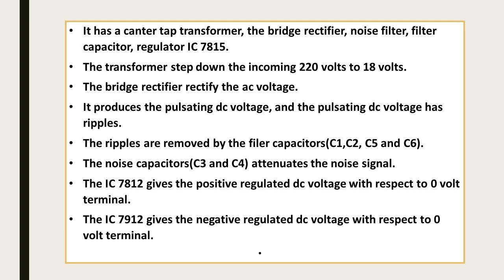The regulator IC 7815 steps down the incoming 220 volts to 18 volts. The bridge rectifier rectifies the AC voltage, producing pulsating DC voltage with ripples. The ripples are removed by the filter capacitors C1, C2, C5, and C6. The noise capacitors C3 and C4 attenuate the noise signal. The IC 7812 gives the positive regulated DC voltage with respect to the 0 volt terminal. The IC 7912 gives the negative regulated DC voltage with respect to the 0 volt terminal.